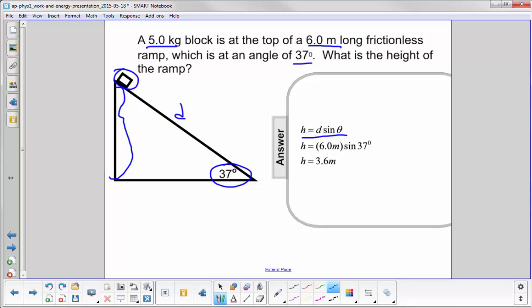So we put in our numbers: 6 meters times sine 37 and we get a height of this triangle equal to 3.6 meters. Notice, we certainly underlined this. This looked like it could be important, but we didn't actually need it for the problem.